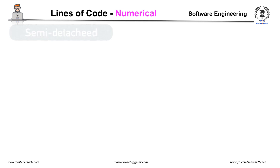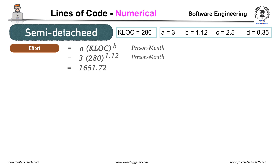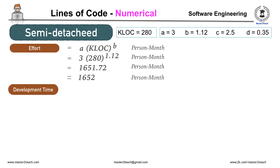Therefore, in semi-detached mode, Effort = a × KLOC^b = 3 × 280^1.12 person-months, which equals 1651.72 person-months, approximately 1652 person-months.